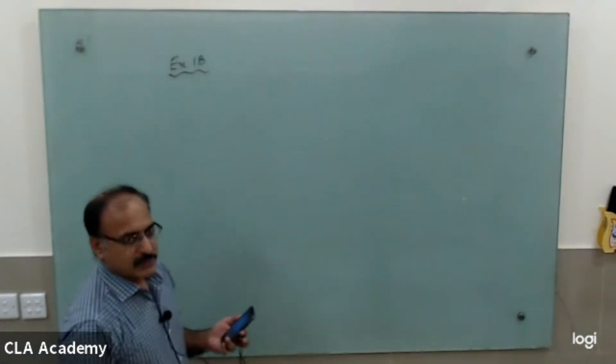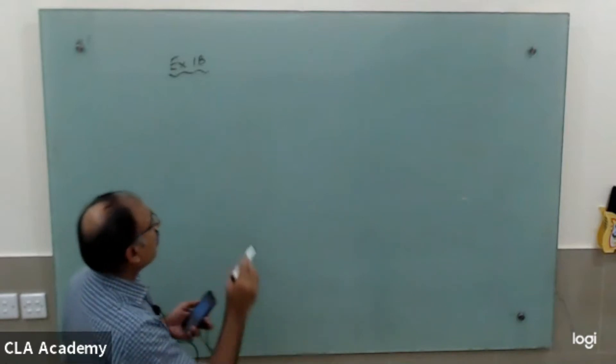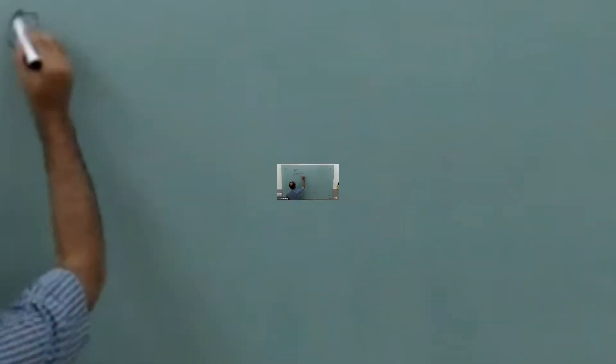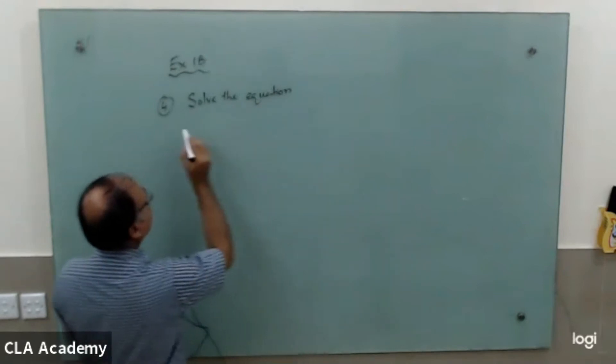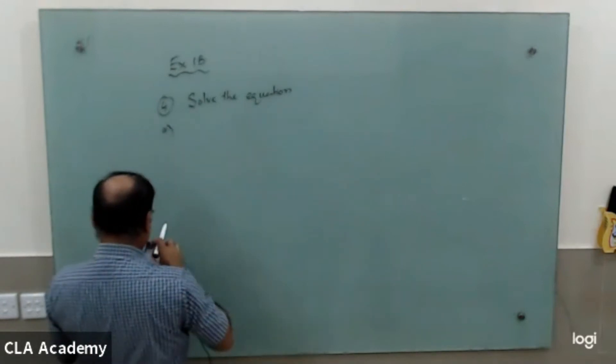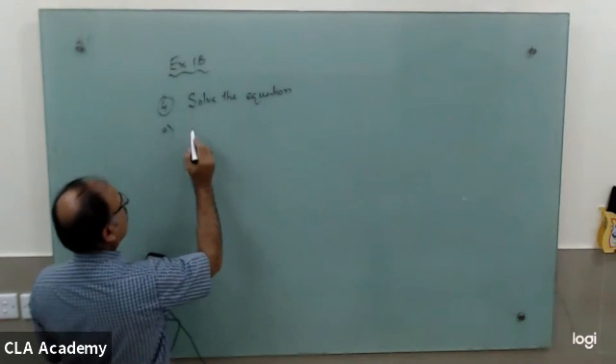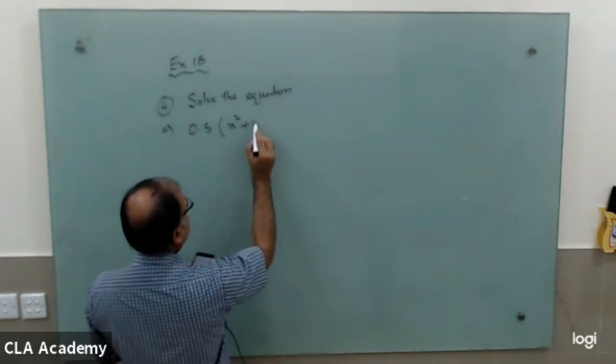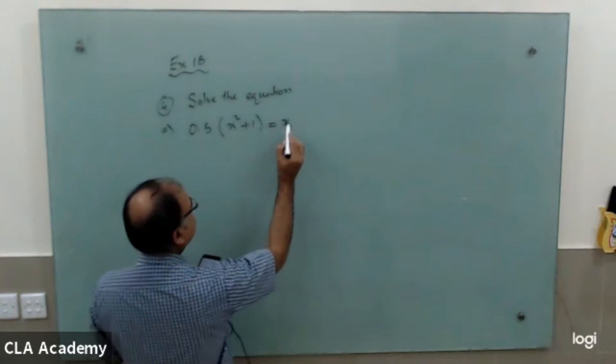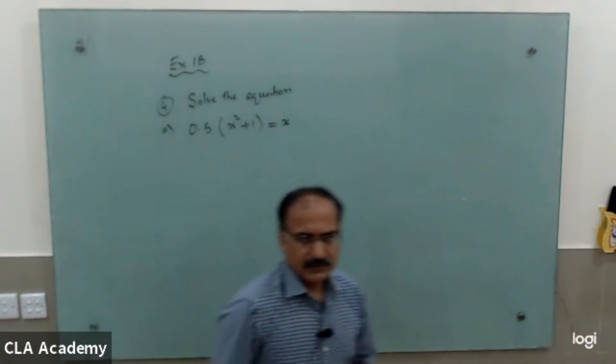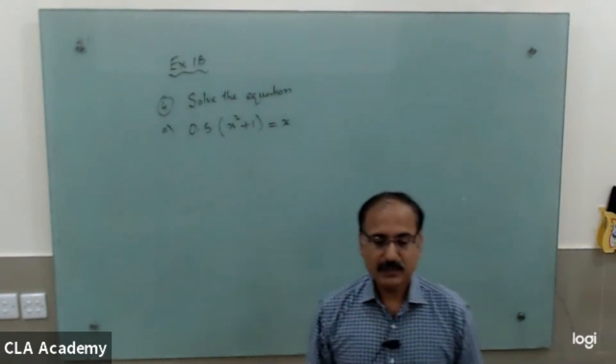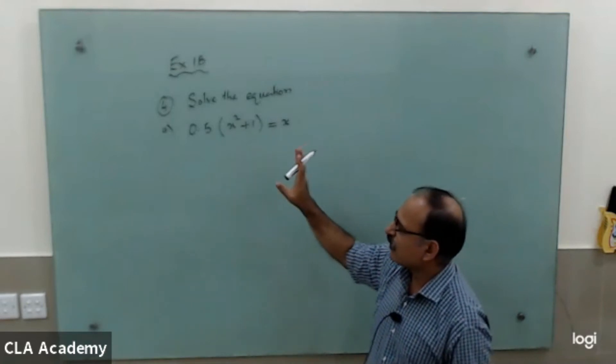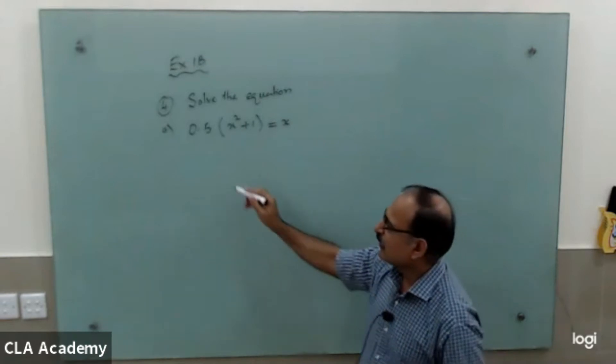Now that we have done question 3a, question number 4 is next. We are given 0.5, and we have to solve this and we have to make a proper quadratic equation in our descending order.